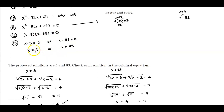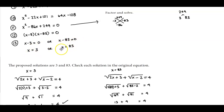Using the zero product rule, we have x minus 3 equals zero, which gives x equals 3, or x minus 83 equals zero, giving x equals 83.